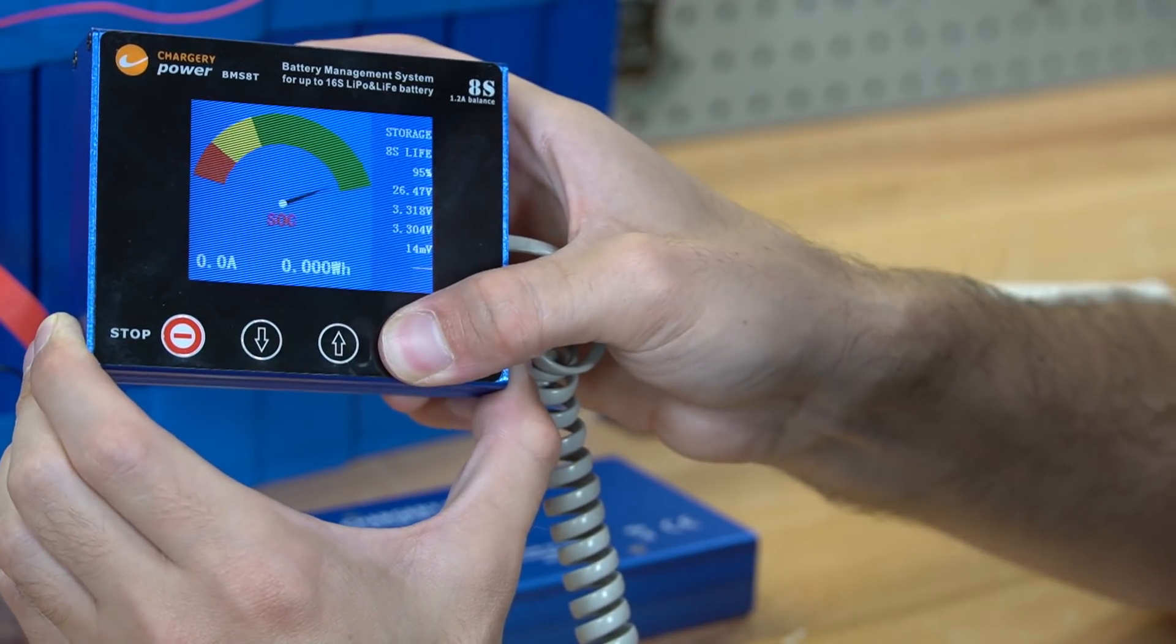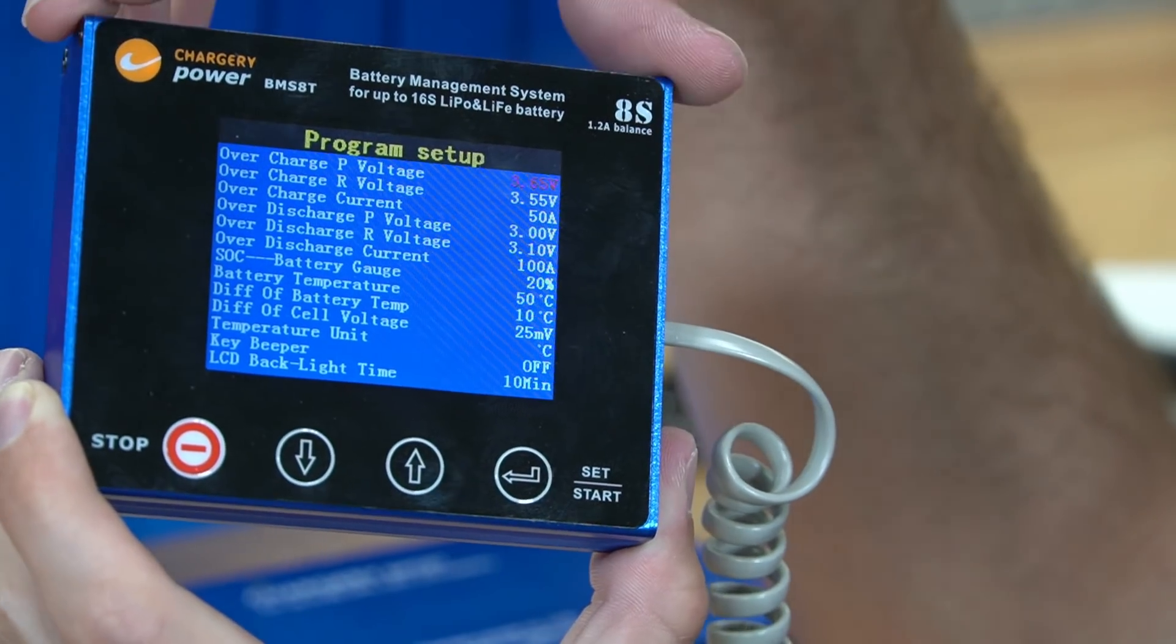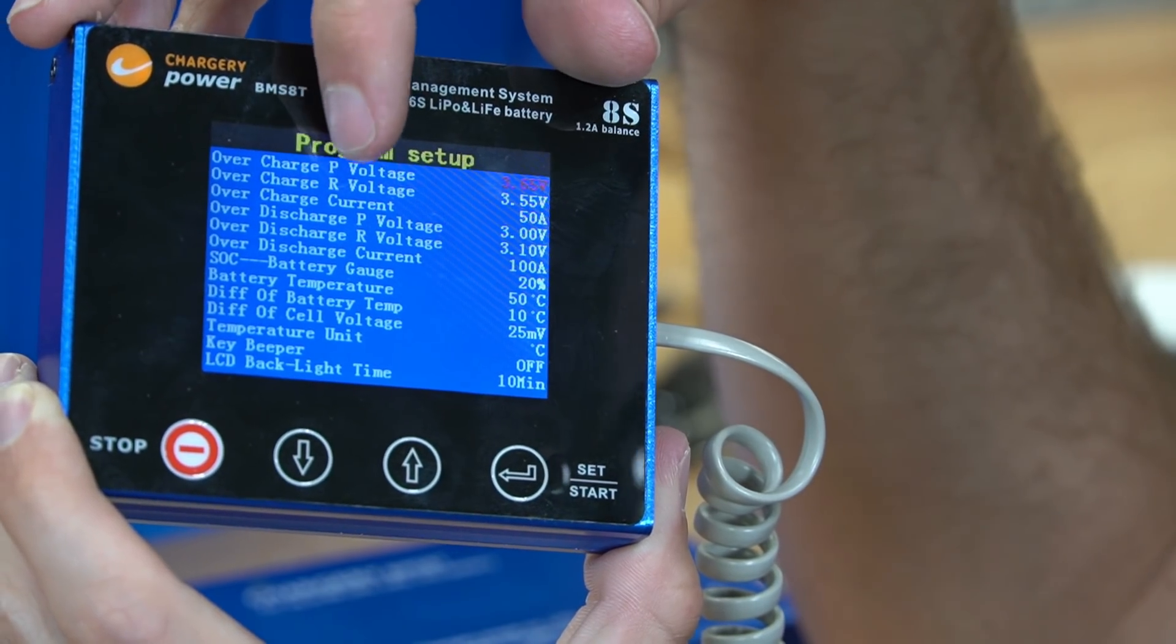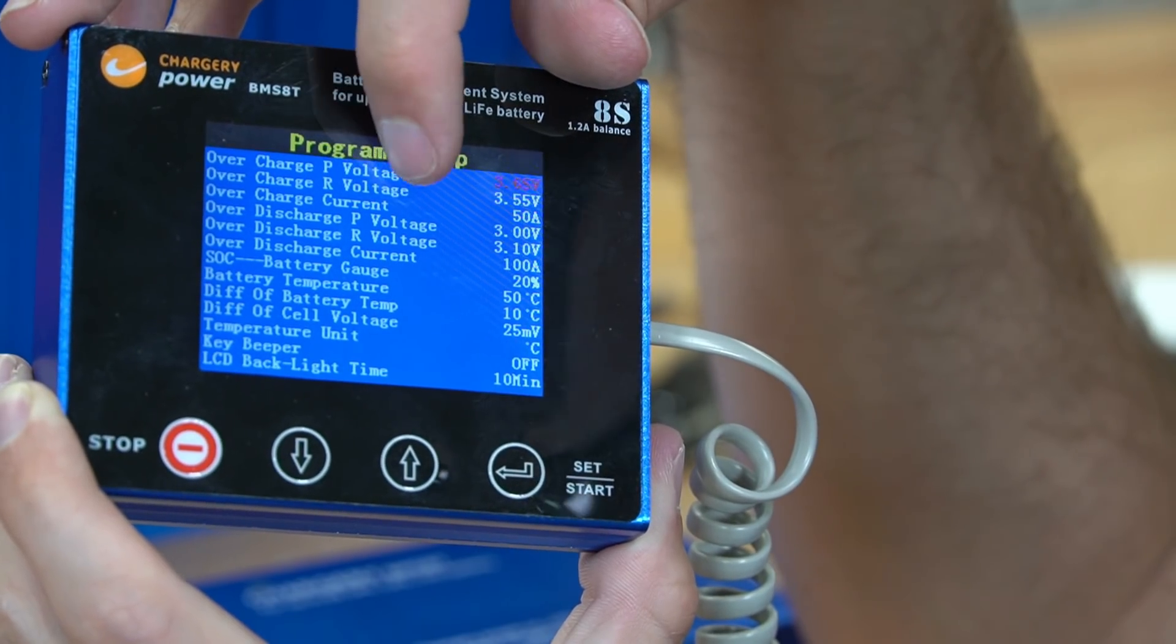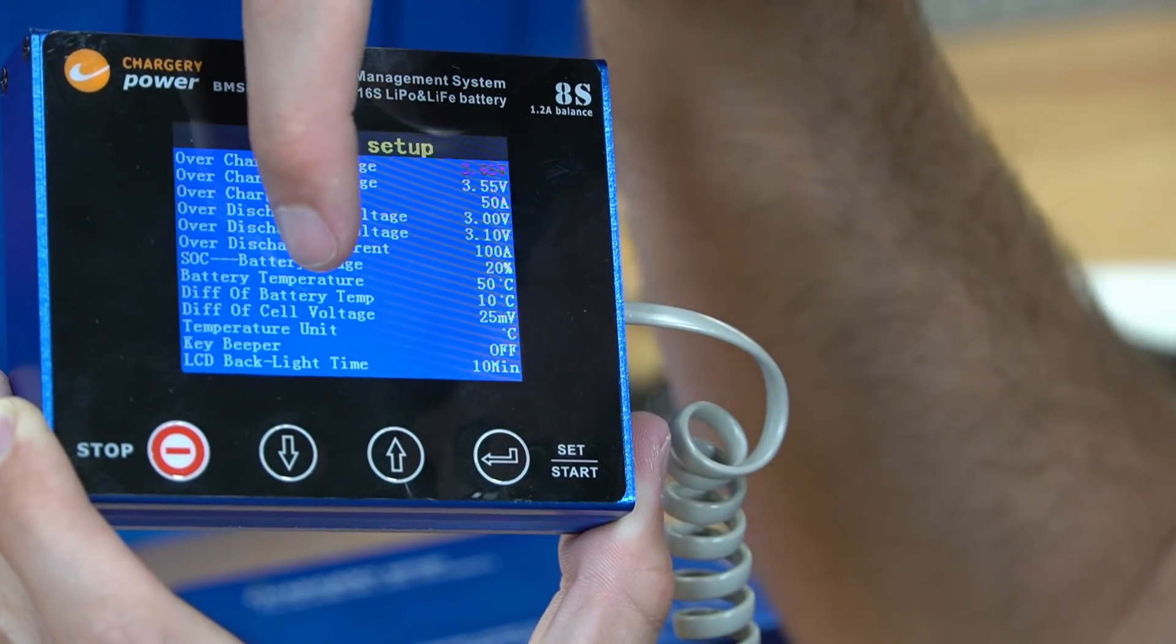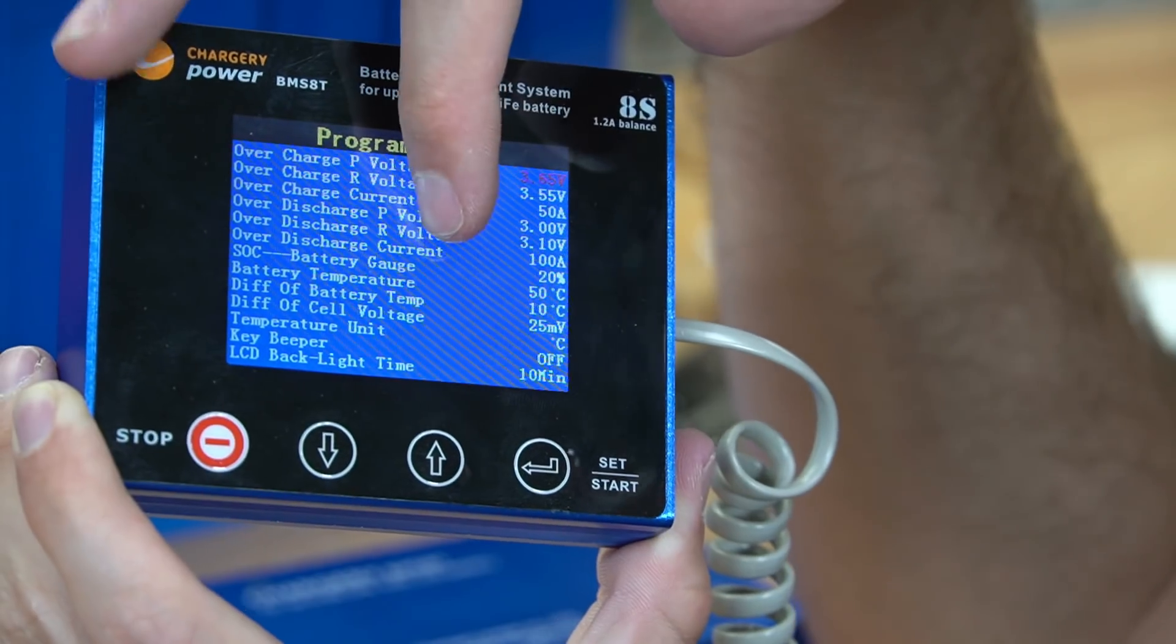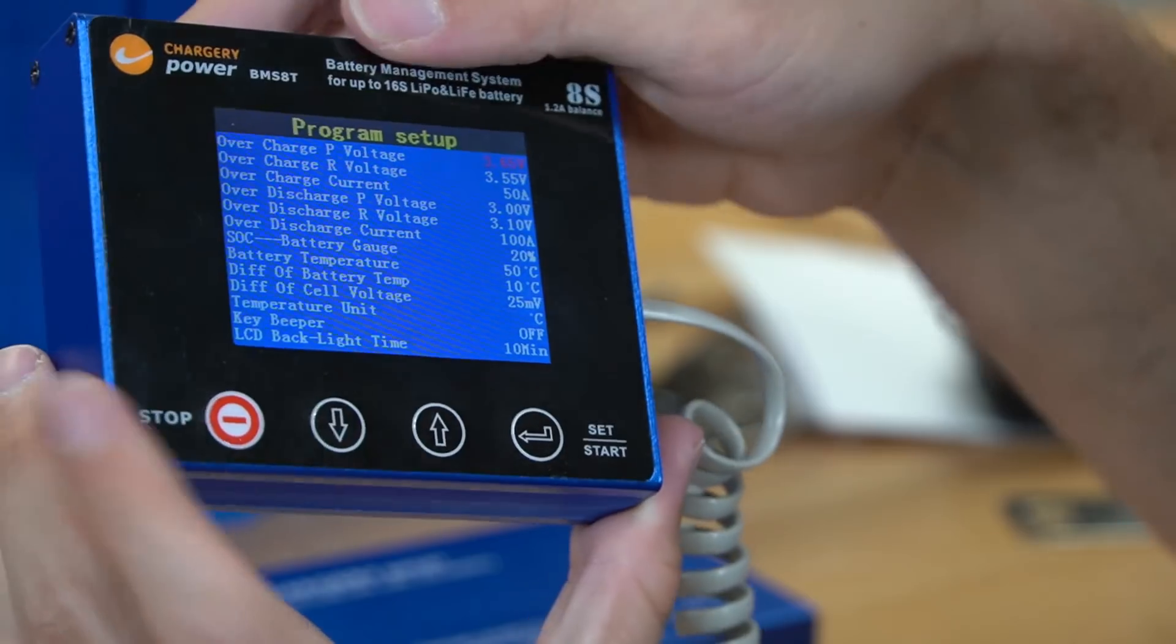If you hold down the enter button you can actually go to the settings and it has lots of options in the program setup menu. We have overcharge protection voltage, overcharge recover or reconnect voltage, overcharge current, over discharge protect voltage, and it also tells us stats about our battery. The battery temperature right now the sensors are not connected so this is not accurate. Let's actually connect all of these sensors and shunts and then go back to this menu.